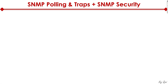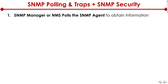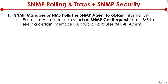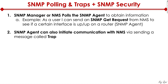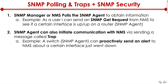Going deeper into SNMP polling and traps: the SNMP manager or NMS polls the SNMP agent to obtain information. For example, as a user I can sit on an NMS server and send an SNMP GET request to check whether a certain interface is up on a router. Conversely, an SNMP agent can also initiate communication with the NMS by sending a trap — for example, a switch can proactively alert the NMS about an interface that just went down.